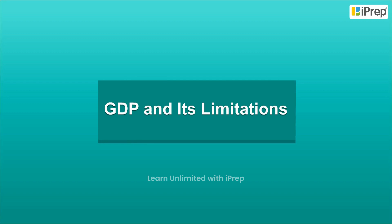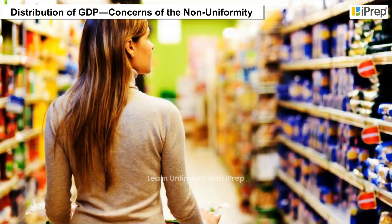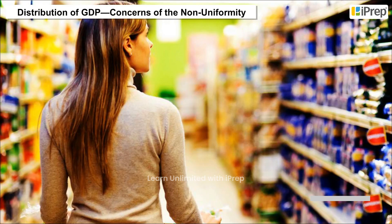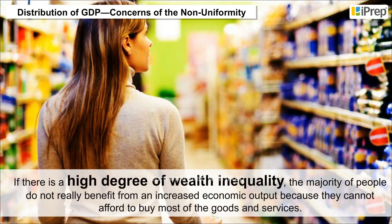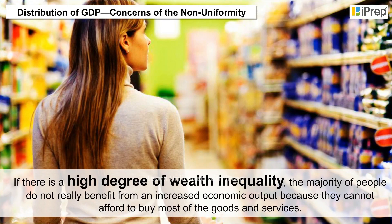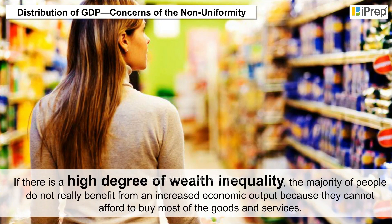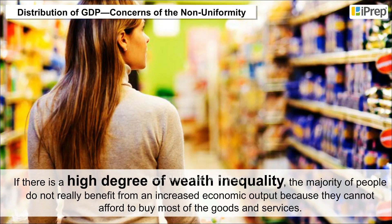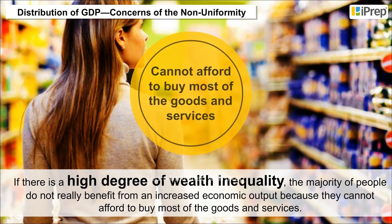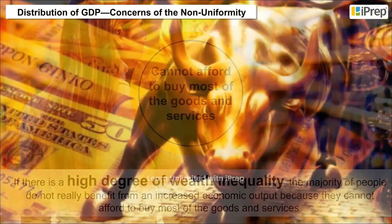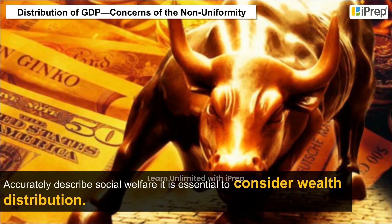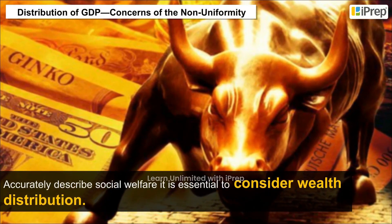GDP and its limitations — one key concern is the distribution of GDP and the non-uniformity of that distribution. If there is a high degree of wealth inequality, the majority of people do not really benefit from an increased economic output because they cannot afford to buy most of the goods and services. Thus, to accurately describe social welfare, it is essential to consider wealth distribution.